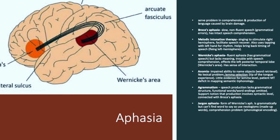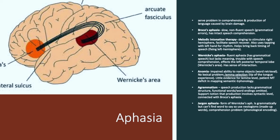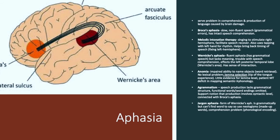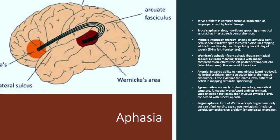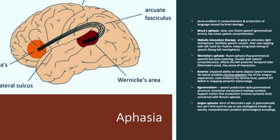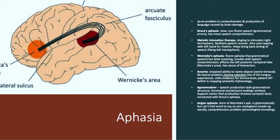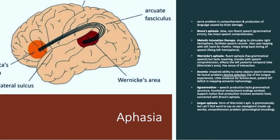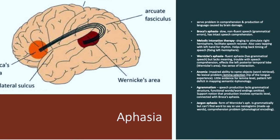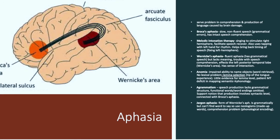Aphasia. This is where there is a severe problem in comprehension and the production of language, usually caused by brain damage. Broca's aphasia is slow, non-fluent speech, which produces grammatical errors, but there is intact speech comprehension. Melodic intonation therapy uses singing to stimulate the right hemisphere, and it facilitates speech recovery. It also uses tapping with the left hand for rhythm, and thus this helps to bring back the timing of speech and fixes the left hemisphere.